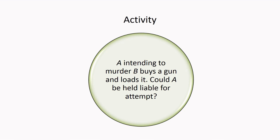Now applying the Equivocality Test: does the fact suggest that he is intensely desiring to kill B? Do the steps taken unequivocally indicate his intention to kill B? No — he has just begun something, which means it is still in the preparation stage. Therefore, A could not be held liable for attempt to murder; it is still in the preparation stage by applying all these tests to determine whether the act would be an attempt or preparation.